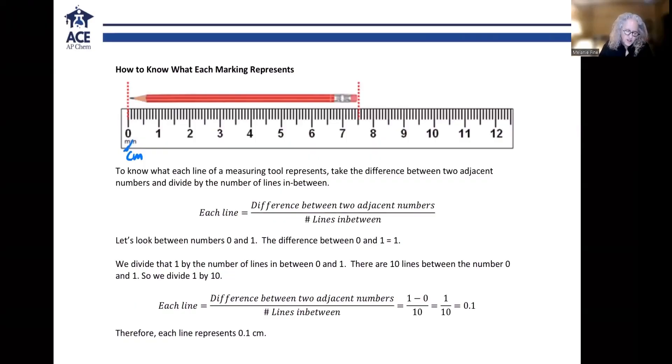To know what each line of a measuring tool represents, you take the difference between two adjacent numbers, the ones that are written like 0 and 1. So I'm going to take the difference between these two adjacent numbers, and then I'm going to count the number of lines in between and divide by that number. So each line of this ruler would be, well, 1 minus 0 is 1, divided by the number of lines in between.